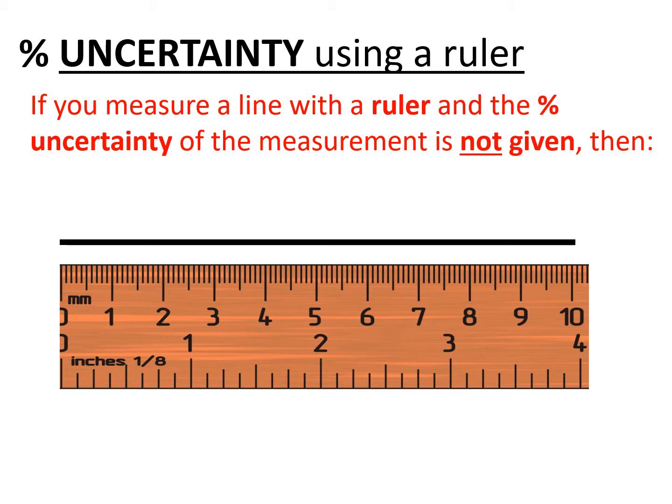We're going to talk about how to calculate the percentage uncertainty of a line using a ruler. If you measure a line in millimetres, and the percentage uncertainty is not given, we can assume that at the start of the line there's half a unit error either side — so that's plus or minus 0.5 millimetres at the start point.